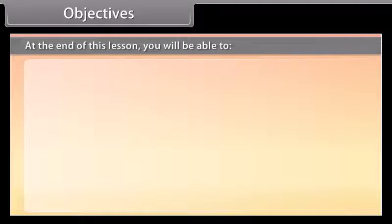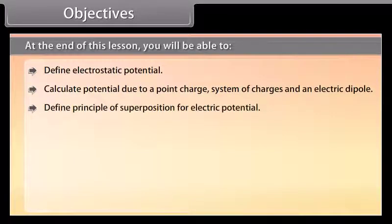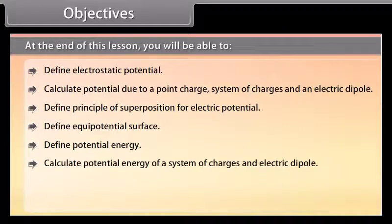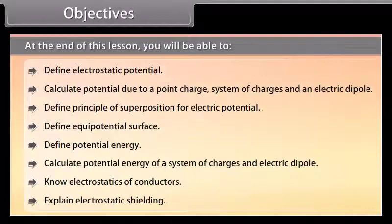Objectives: At the end of this lesson, you will be able to define electrostatic potential, calculate potential due to a point charge, system of charges, and an electric dipole, define the principle of superposition for electric potential, define equipotential surfaces, define potential energy, calculate potential energy of a system of charges and an electrical dipole, understand electrostatics of conductors, and explain electrostatic shielding.